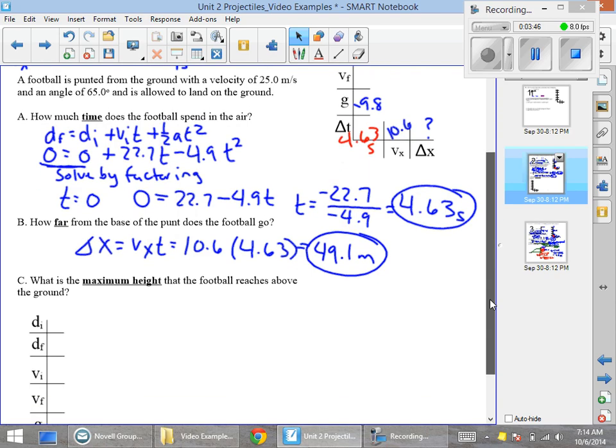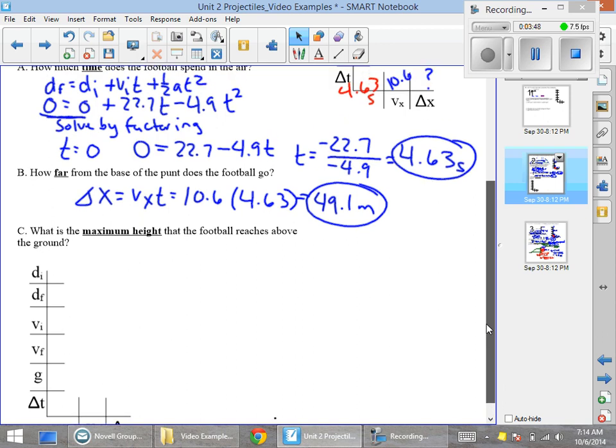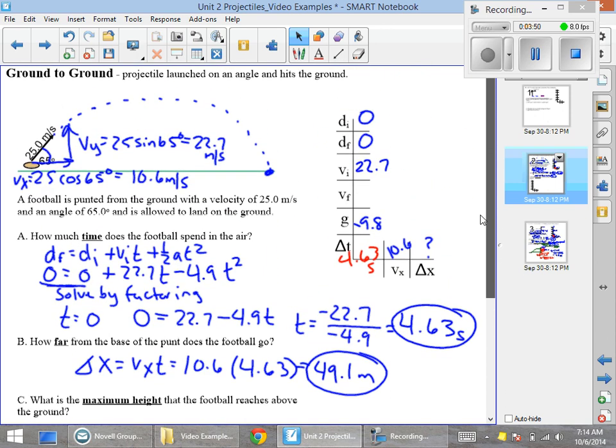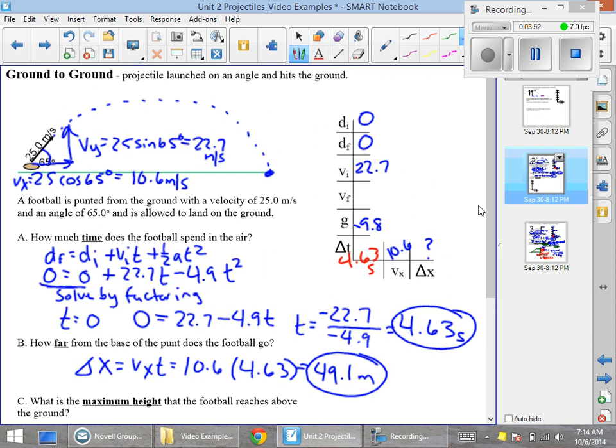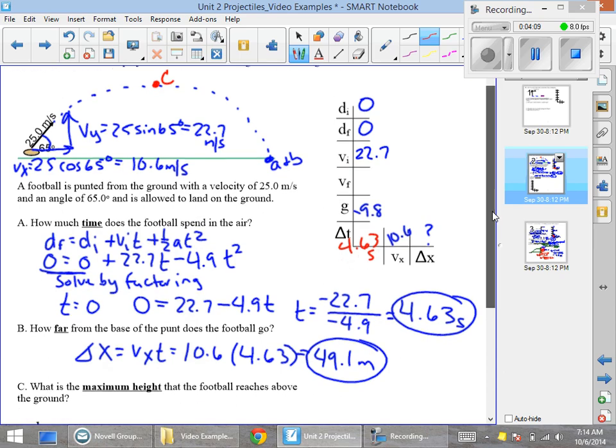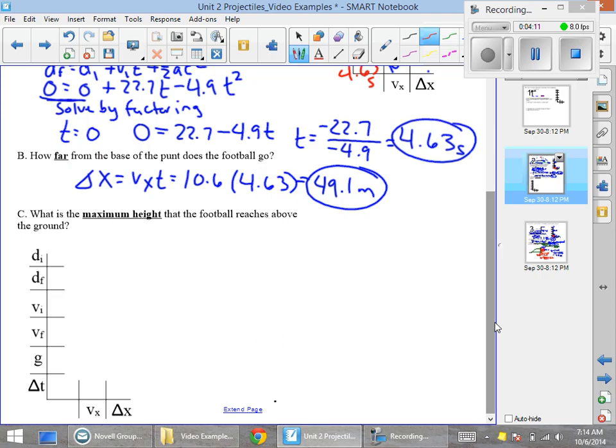Now, for maximum height, what we are going to be looking at here is if we take a look on our picture. Parts A and B were talking about where the football lands. Part C is actually talking about up here at its maximum height. So whenever you're looking at a different spot in its motion for a different portion of the problem, you actually should set up a new chart because we've had some things change.